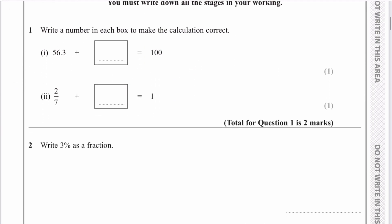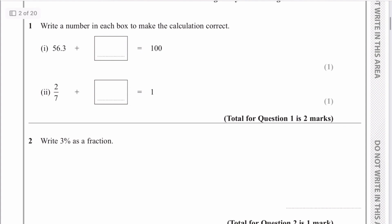Question one says write a number in each box to make the calculation correct. We're looking for the difference between 100 and 56.3. You might do it slightly differently to me, but you should be getting an answer of 43.7. It is a calculator paper so you can put these directly into a calculator. For the next one, what do we add to two sevenths to make one whole? That's going to be five sevenths.